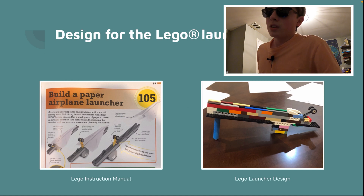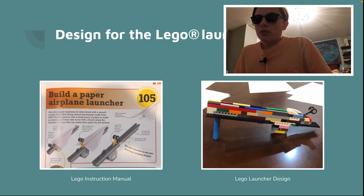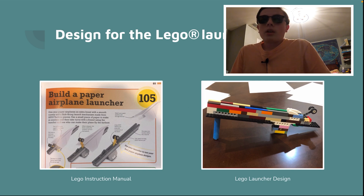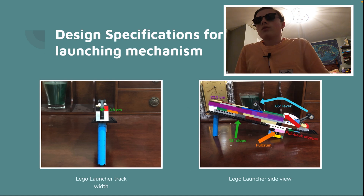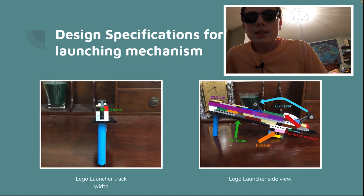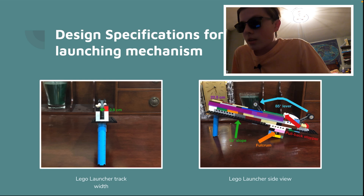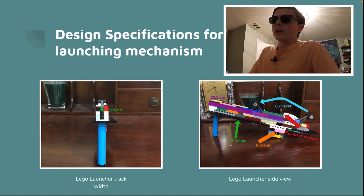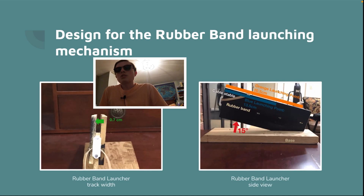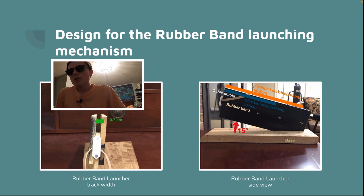I even created some specifications — this is the design for the Lego launcher from an official Lego book. I would say it would have worked if I used different models. The design specifications for the launching mechanism that didn't work: the launcher track width was about 0.8 centimeters wide. This took some sophisticated editing to put these arrows and diagrams together — my science teacher was impressed by the effort. The rubber band launching mechanism design process is shown here, with the rubber band launcher track width at 0.7 centimeters wide.